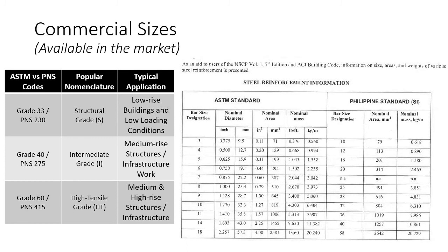Next is Grade 40 or PNS 275. Use this for medium-rise structures, and for infrastructure work — again, stirrups for beams and ties for columns. Then for the high grade, Grade 60 or PNS 415, use this for medium-rise and high-rise structures or infrastructures — major reinforcements for footing, beams, and columns.